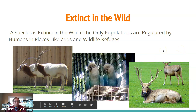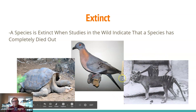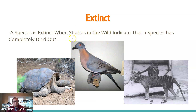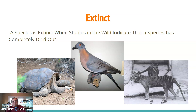The last category is extinct — when studies in the wild indicate that a species has completely died out. Famous examples include the Tasmanian tiger, or thylacine, which went extinct in Australia; the passenger pigeon, which was once abundant across North America; and Lonesome George, the last surviving member of his Galápagos tortoise species. Extinction is forever, unless future technology can revive these animals, so we want to do our best to prevent extinction when it seems to be caused by human activity.